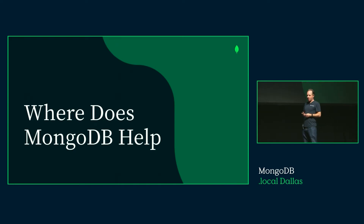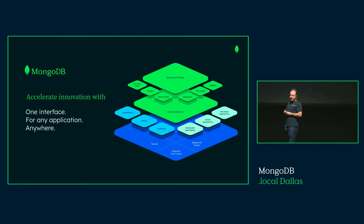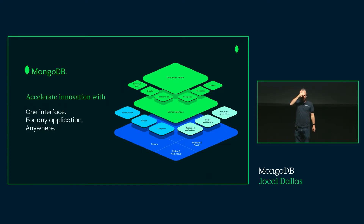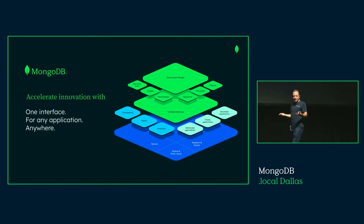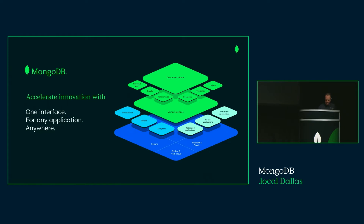Let's talk about where MongoDB can help. As a recap, it starts with the document model — that's always been the bread and butter of what MongoDB is known for. It's actually a superset of other data models: a relational model is essentially a flat document with linking, and you can handle graph models with the document model as well. We also have time series collections, all available through one API and a unified interface.